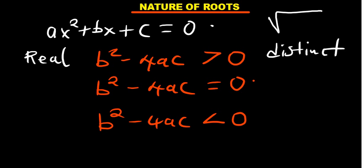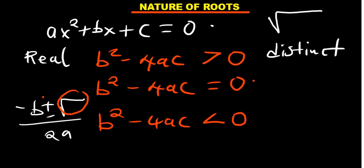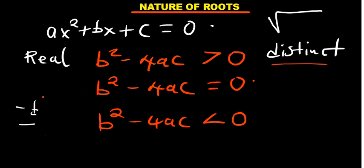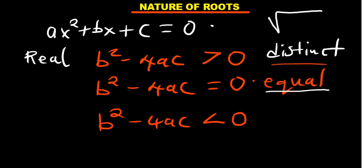When b squared minus 4ac equals 0, recall that the quadratic formula gives two solutions by adding and subtracting the square root. But if that value is 0, adding or subtracting it changes nothing — you only get one solution. We say the roots are equal and real, because the curve still touches the x-axis.